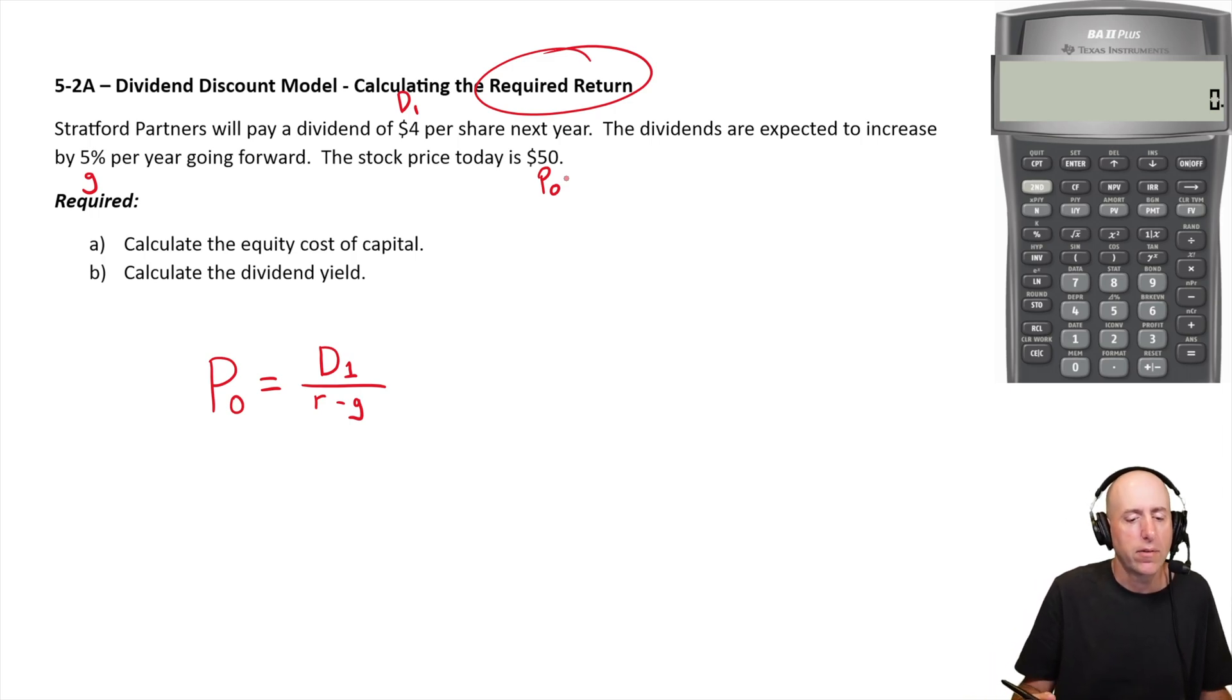Calculate the equity cost of capital. That's solve for R. So we can sort of rearrange this and I'll show you the algebra here. So I'm going to multiply both sides by R minus G. So I get P naught times R minus G equals D one.